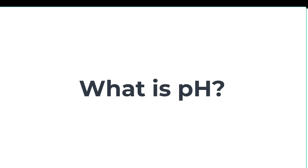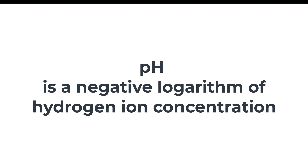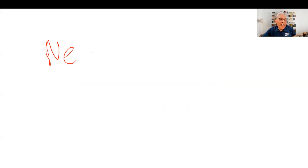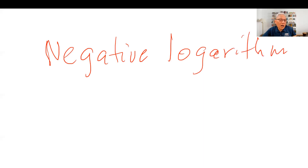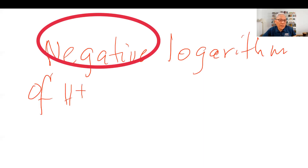What is pH? pH is a negative logarithm of hydrogen ion concentration. Let me write that down — pH is a negative logarithm of hydrogen ion concentration.